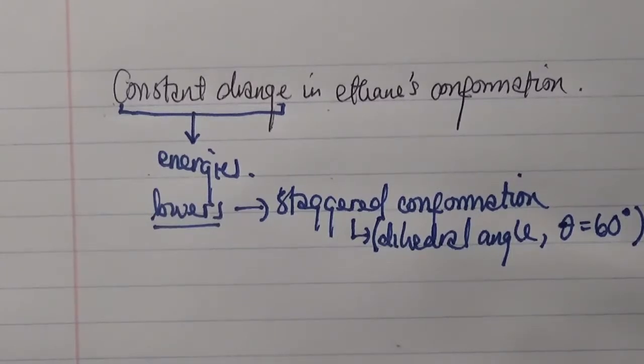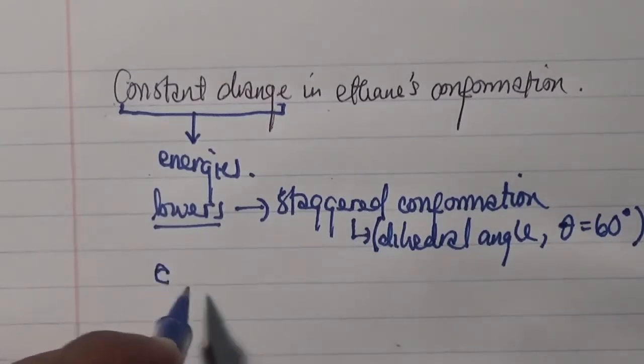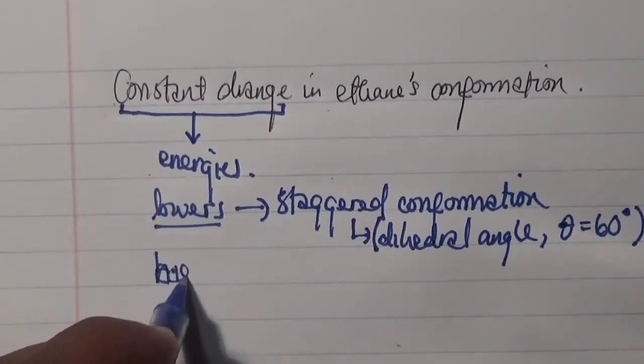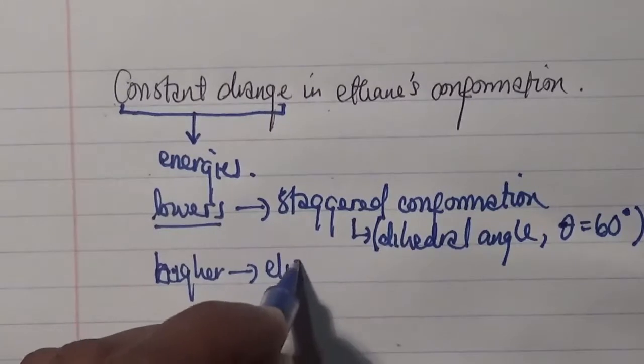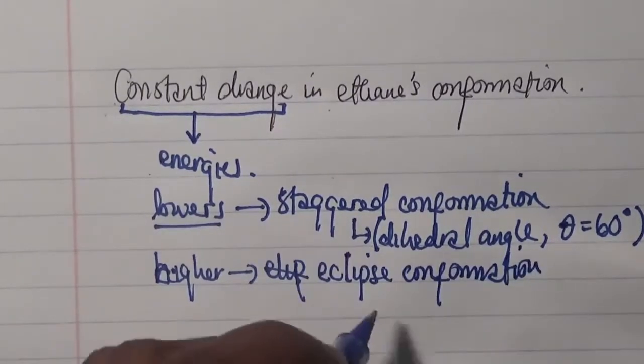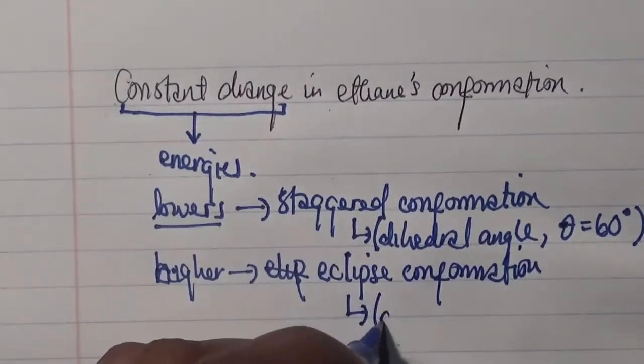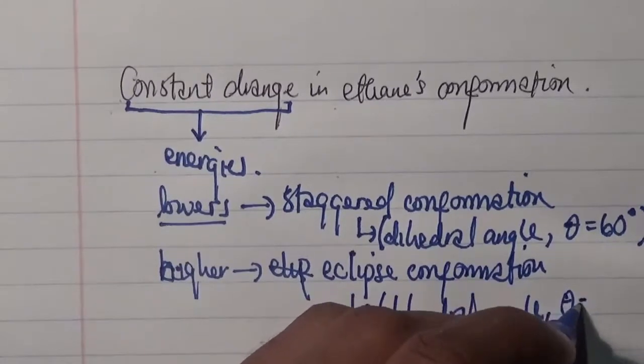Before we look at the why, we want to look at the ones that will give us a higher energy. However, in the case of eclipsed, we're going to have a higher energy. An eclipsed with a higher energy will have a dihedral angle of 0 degrees.